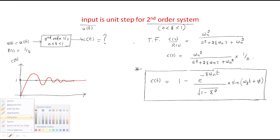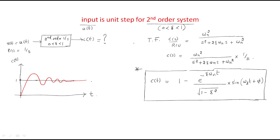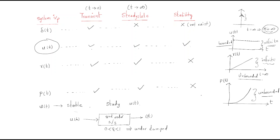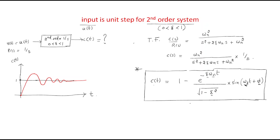Here, ζ is the damping ratio, ωₙ is the natural frequency, ωd is the damped frequency, and φ is the phase. The key equation is c(t) = 1 − [e^(−ζωₙt) / √(1 − ζ²)] · sin(ωdt + φ). This covers the different inputs, why we selected the unit step signal, and the resulting output for the second order system. I hope all of you understood the session — thank you.